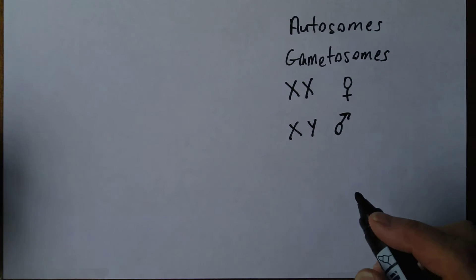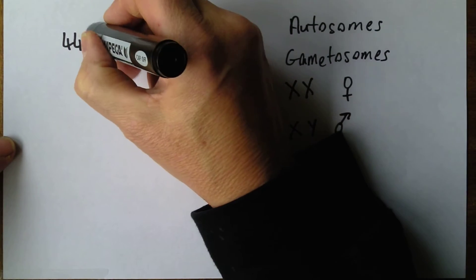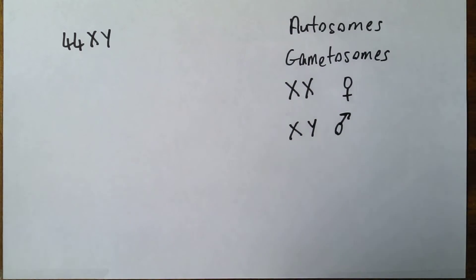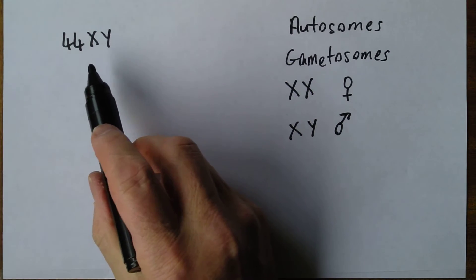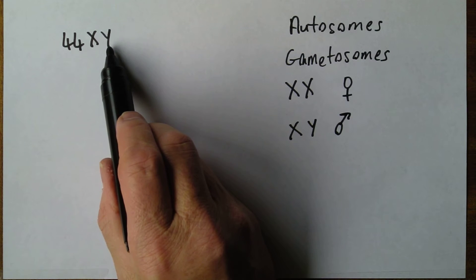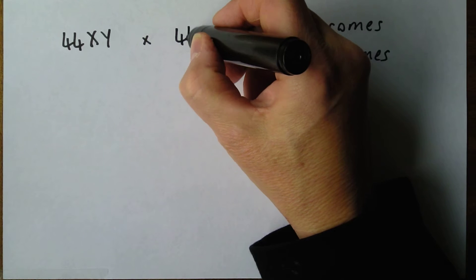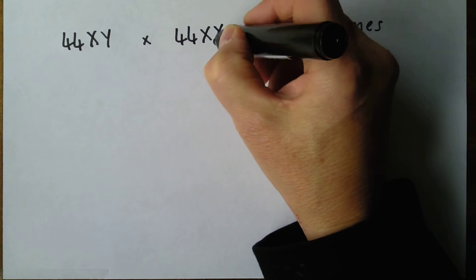So a man is going to be 44 with an X and a Y. In other words, a man has 44 autosomes and his gametosomes are X and Y, and to reproduce with a woman 44XX.